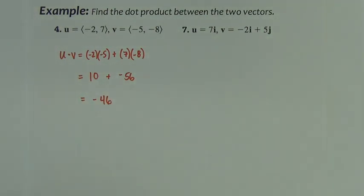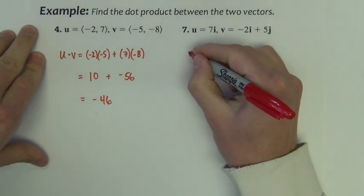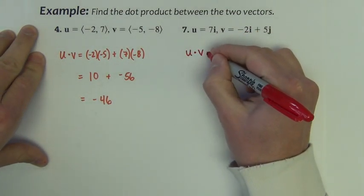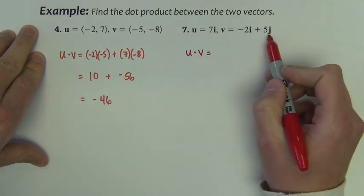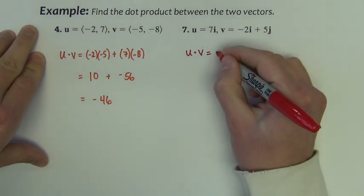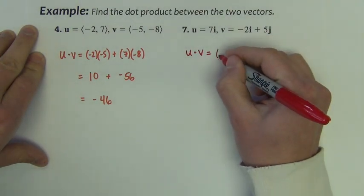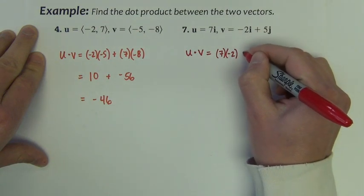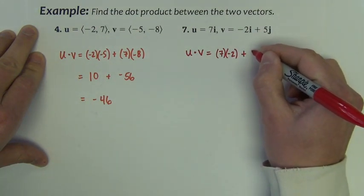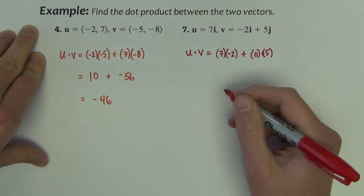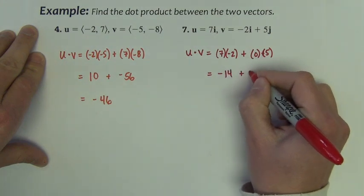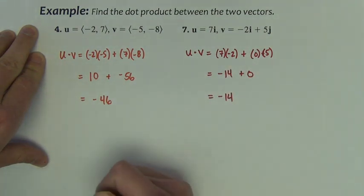Just to reiterate one more time, the dot product is not a vector. The dot product computation is just a number. Second example, u·v. In this linear combinations form, remember that the i is the x and the j is the y. So it would be 7 times negative 2 plus the j's. Well, vector u has a j value of 0, so 0 times 5. This becomes negative 14 plus 0, or negative 14.